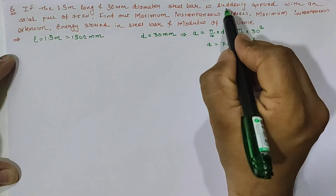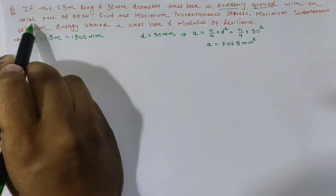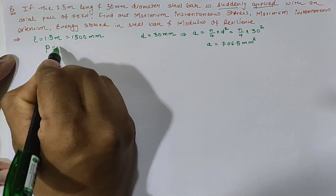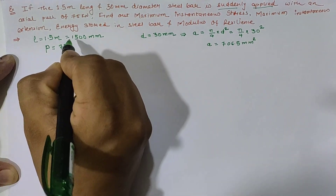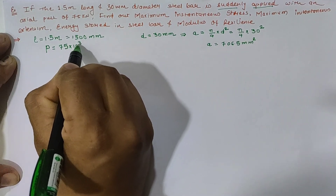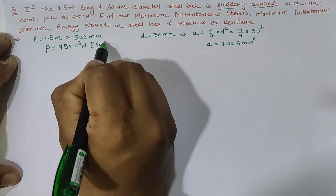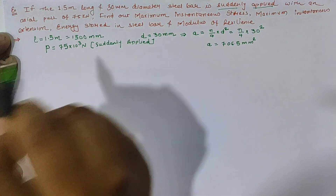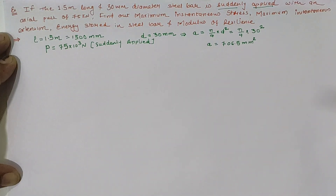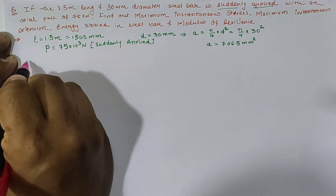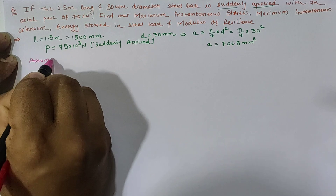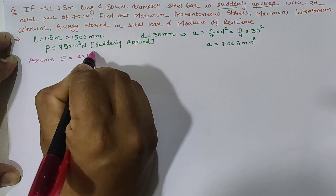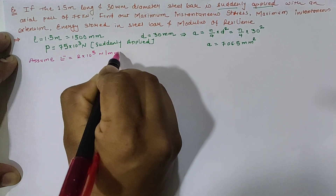Next, we have a suddenly applied axial load of 75 kN, which is 75 into 10 raised to 3 newtons, suddenly applied. We also assume capital E for the given steel material as 2 into 10 raised to 5 newton per mm square.